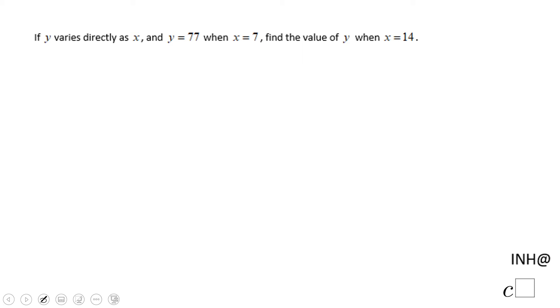Welcome or welcome back. I need help at C squared. In this example we have a direct variation problem. It's called y varies directly as x, and y is 77 when x equals 7, and we need to find the value of y when x equals 14.